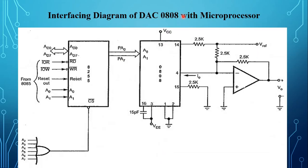This is the interfacing diagram of DAC 0808 with the 8085 microprocessor. The DAC is interfaced with the 8085 using 8255 as a parallel port to send digital data to the DAC. For port A the address is 00, for port B it is 01, for port C it is 02, and the control register is 03. The voltage reference and resistor R14 determine the total reference current source, and R15 is generally equal to R14 to match the input impedance of the reference current amplifier.